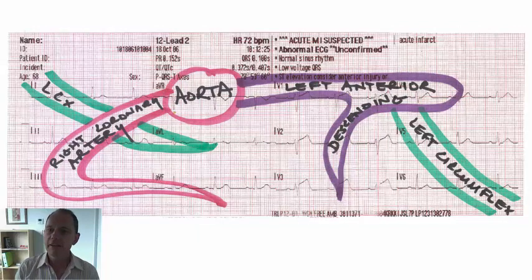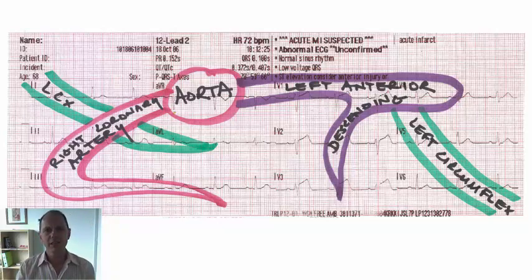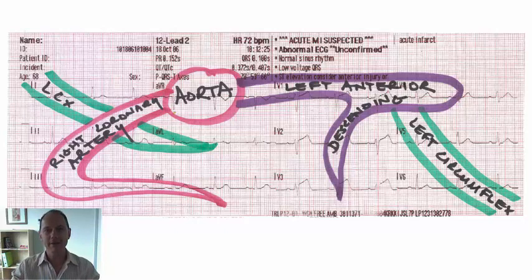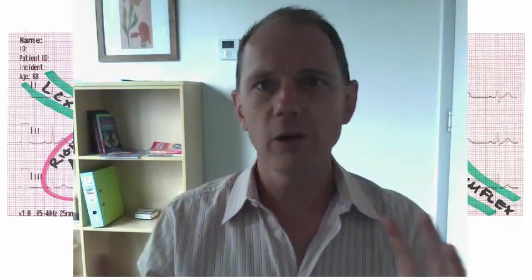The left circumflex artery feeds the lateral leads — V5 and V6, your low lateral leads, and leads 1 and AVL, your high lateral leads. That's a really useful diagram that helps you understand which parts of the heart are perfused by which coronary arteries, and therefore which coronary arteries are being affected when you see ST elevation or ST segment changes on your 12-lead ECG. Remember, the heart is a complex three-dimensional organ and each patient will have slightly differing anatomy, so this rule will probably cover around 80 to 90 percent of your patients — but just remember some may not quite fit this picture perfectly.